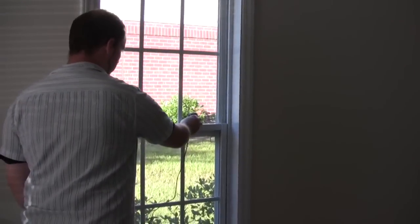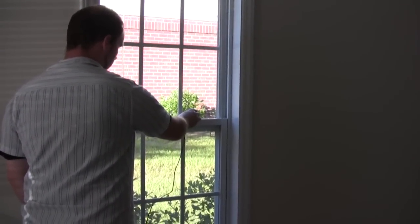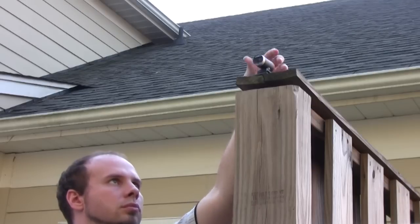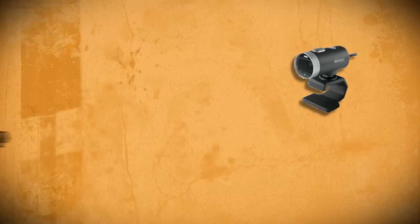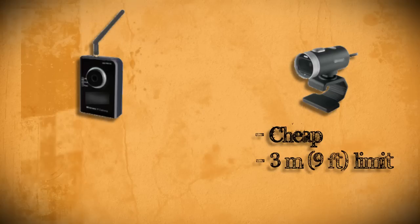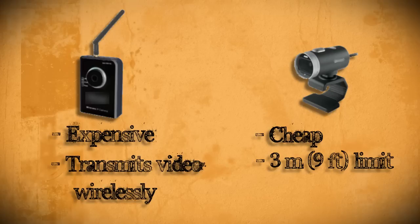The first thing you need to figure out is where to place your cameras and how they're going to connect back to your computer. USB devices can only go about 3 meters before they start losing data. If you want to cover more areas that cannot be reached by USB cord, you can use a wireless IP camera, which is more expensive but can transmit the video over your wireless internet connection.